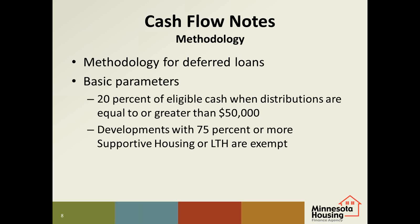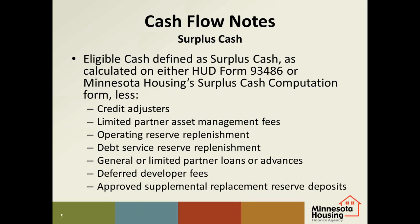The basic parameters remain unchanged from the 2015 RFP, where deferred loans required an annual payment equal to 20% of eligible cash in excess of $50,000. Developments with 75% or more supportive housing or long-term homeless are exempt. Surplus cash is now defined as eligible cash as calculated on either HUD form 93486 or Minnesota Housing's surplus cash computation form.